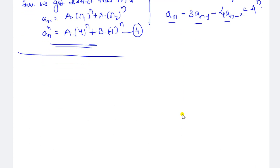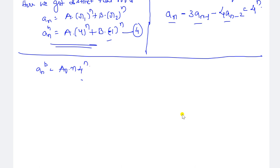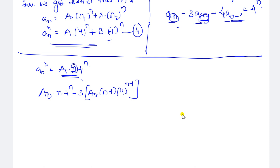The substitution gives: a₀·n·4^n minus 3·a₀·(n-1)·4^(n-1) minus 4·a₀·(n-2)·4^(n-2) equal to 4^n. In the second term, n is replaced by n-1, giving a₀·(n-1)·4^(n-1). In the third term, n is replaced by n-2, giving a₀·(n-2)·4^(n-2). Do not substitute on the right-hand side.